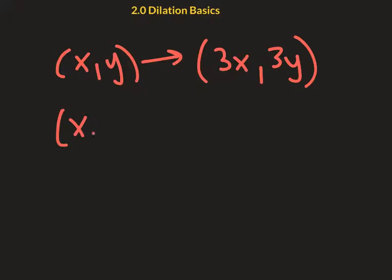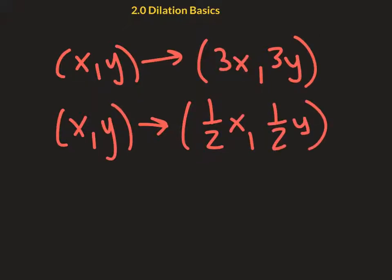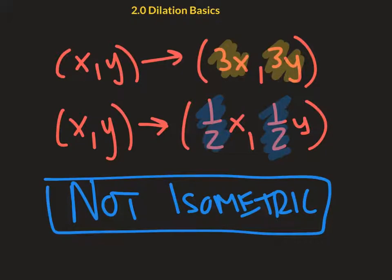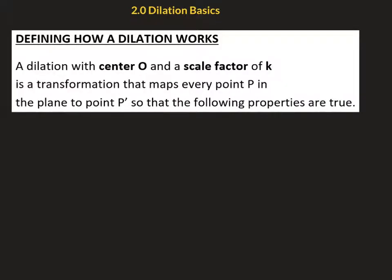We also know a few things about the rule, the coordinate rule. We would say that this is a dilation, and this is also a dilation. Not only do we know that these are dilations, we know that this first one here is an enlargement because things are getting three times bigger. And the next one is a reduction because things are getting half the size. We also know that it's not isometric, and the reason we know that is because the size physically changes. To be isometric, it must be identical.